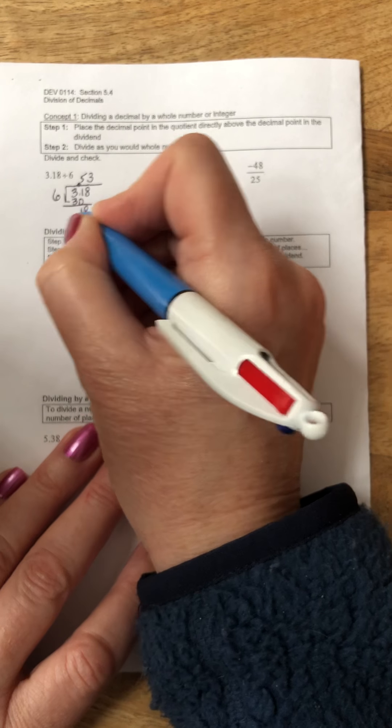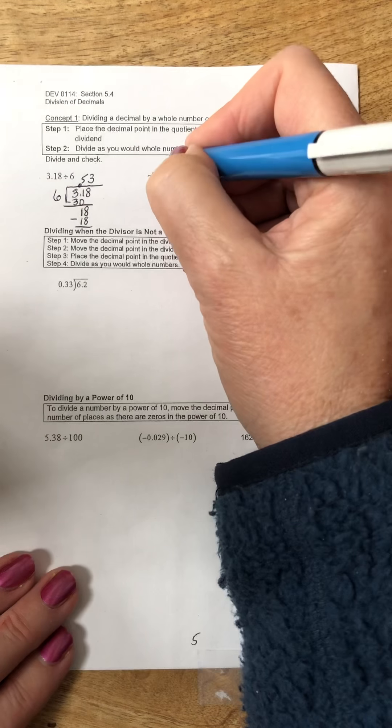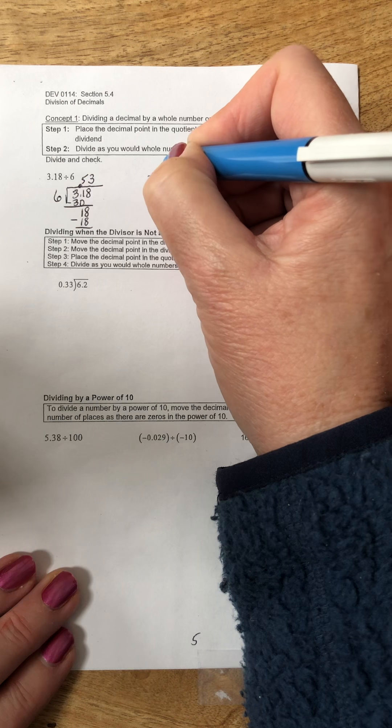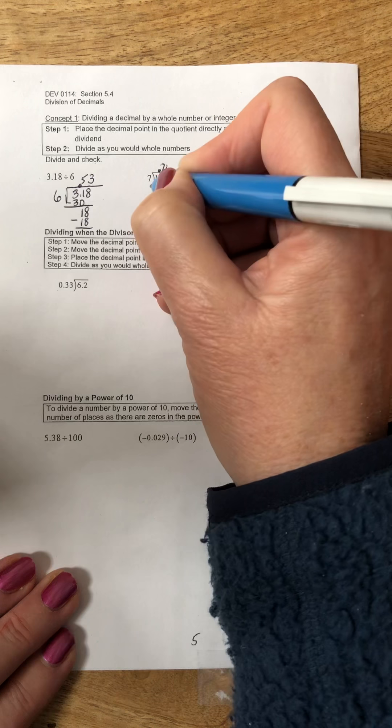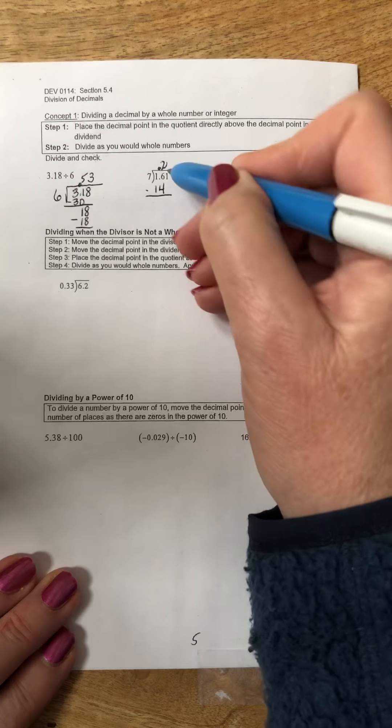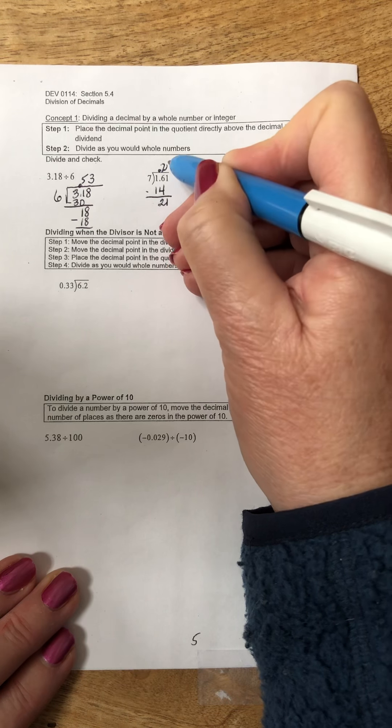5 times 6 is 30, subtracting at 1 we bring down the 8, 6 goes into 18 three times and we have no remainder. 7 is going into 16 twice, 2 times 7 is 14, subtract and we have to bring down the 1 and we have no remainder.